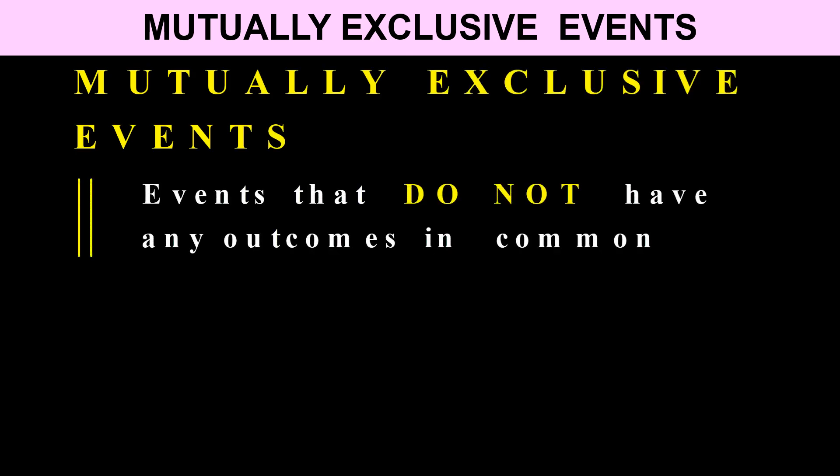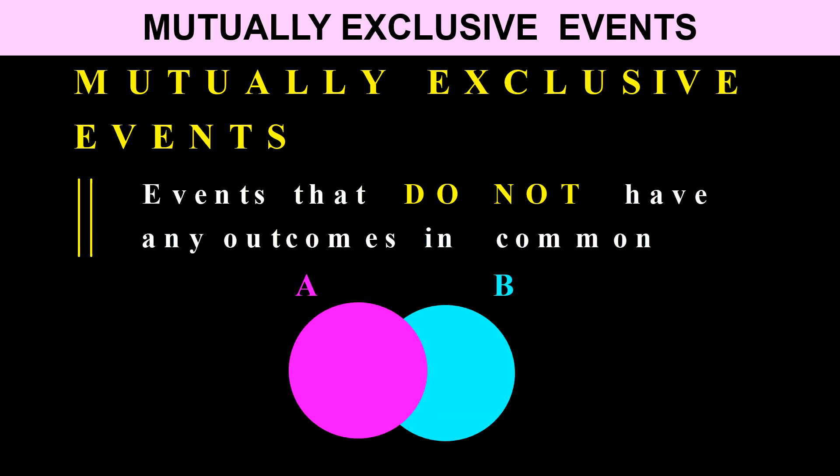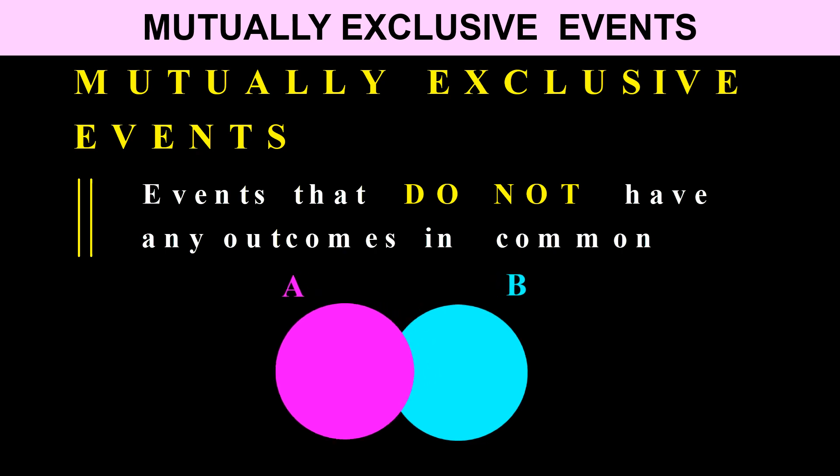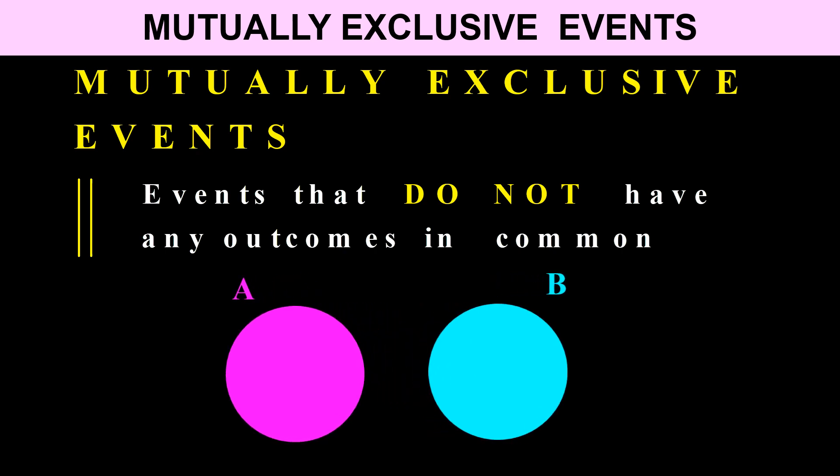Mutually exclusive events are events that do not have any outcomes in common. If you look at event A and event B and they overlap, they do have something in common. When we say they're mutually exclusive, they should have nothing in common.